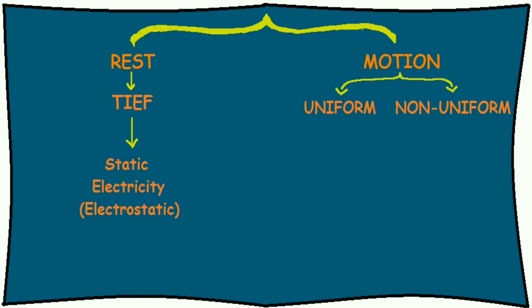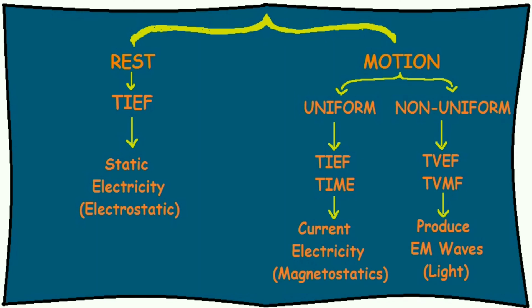Now, when the charge is in motion, it can be either in uniform motion or non-uniform motion. When it is in uniform motion, it produces time-independent electric as well as magnetic field. When the charge is uniformly moving, we study about current electricity and magnetostatics.